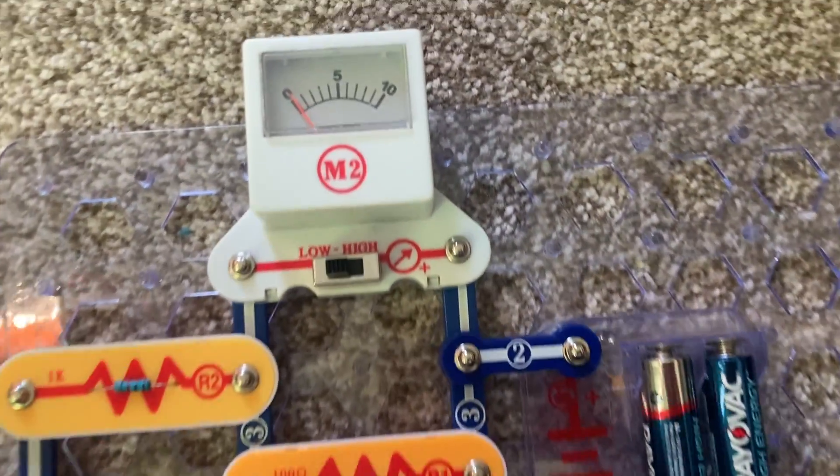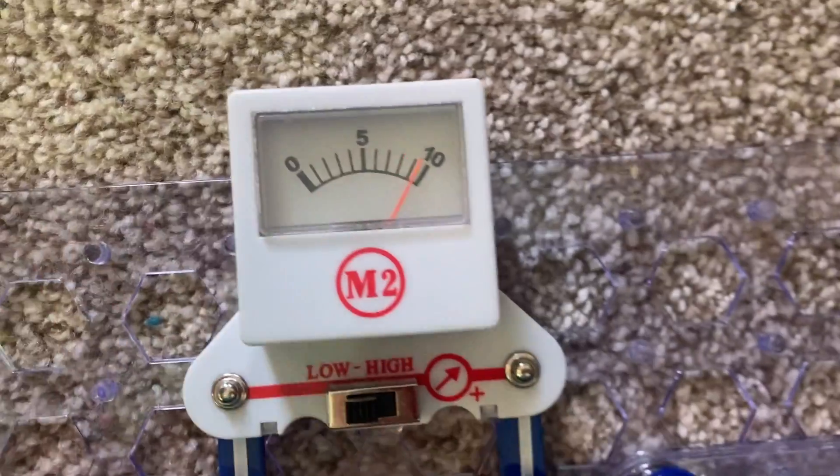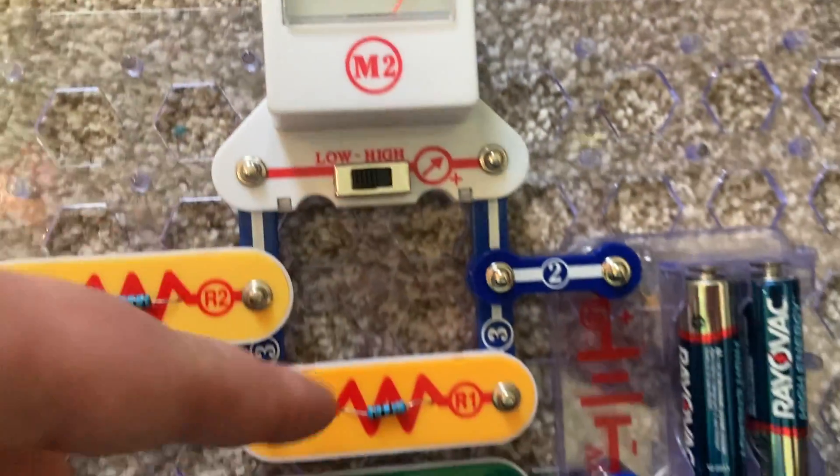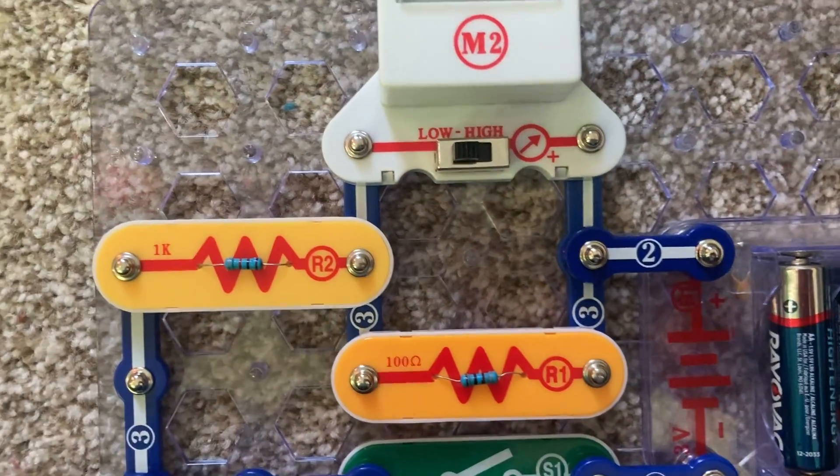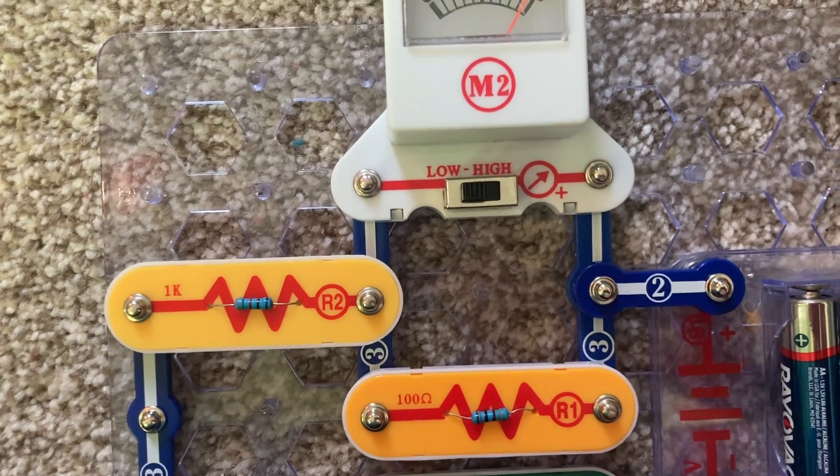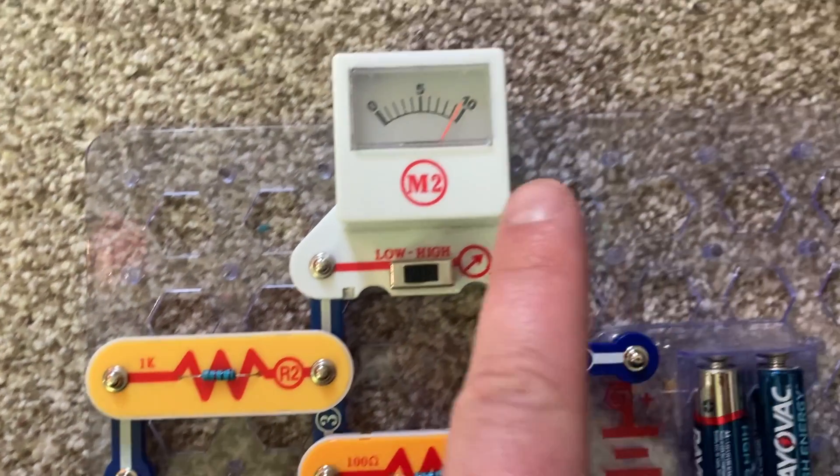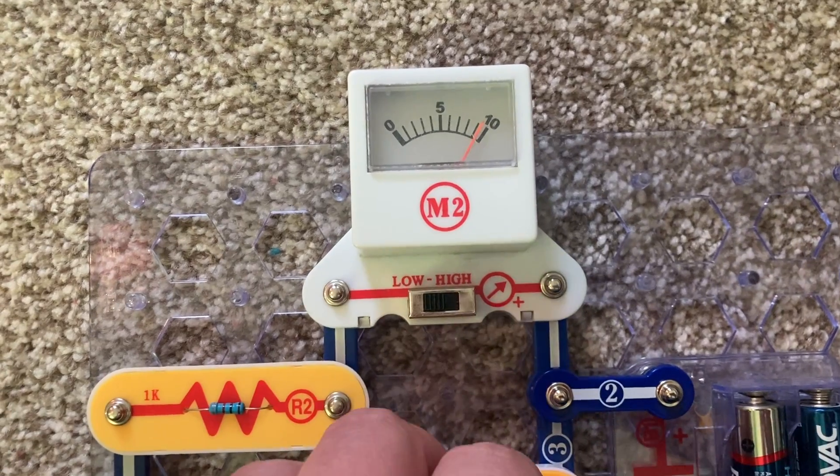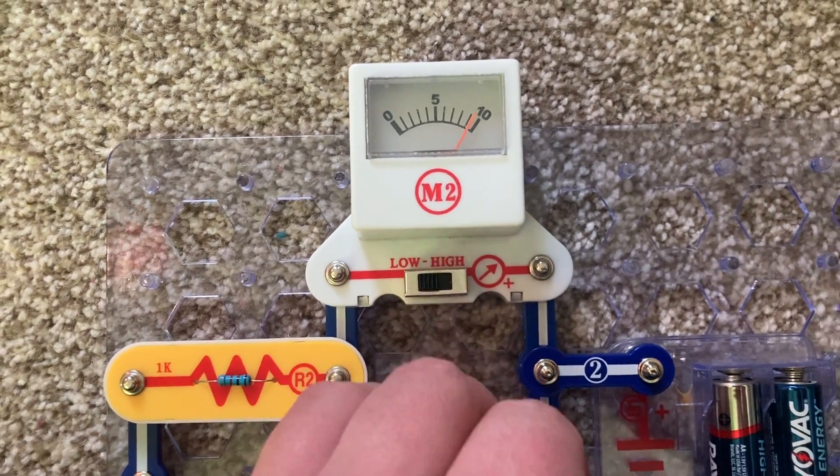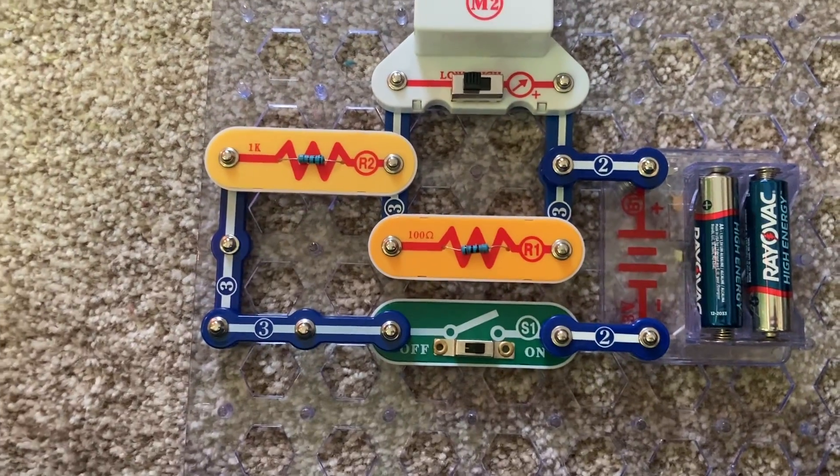Now when I turn on the slide switch, with the R1 resistor, the range is now 3 milliamps. The meter's range has increased tenfold. The lower the resistor value, the wider the range of the meter.